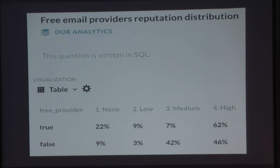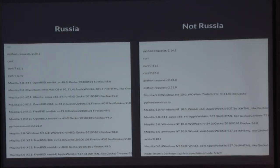Here's a reputation distribution of free email providers: 62% of free email providers queried have high reputation, and 22% have no reputation. Also interesting: we get a lot of requests from Russia, and there's a curious pattern of Russians using FreeBSD and OpenBSD.